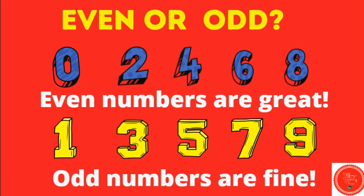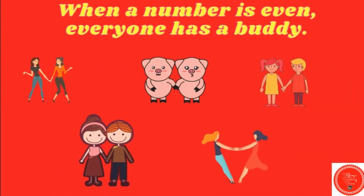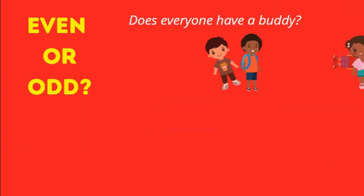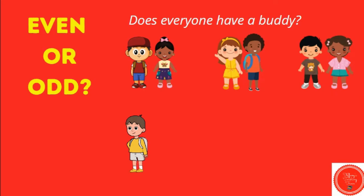Even or odd: zero, two, four, six, eight — even numbers are great. One, three, five, seven, nine — odd numbers are fine. When a number is even, everyone has a buddy. When a number is odd, someone is left without a buddy. So is the number seven even or odd? This one right here does not have a buddy, so that makes seven an odd number.